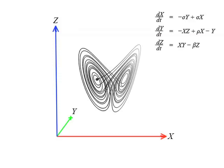Notice that when the system is in one lobe, x and z are positively correlated, and when the system is in the other lobe, x and z are negatively correlated.